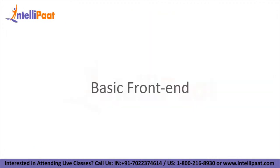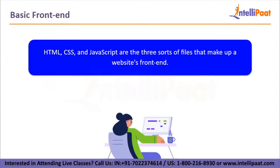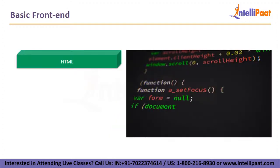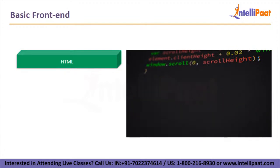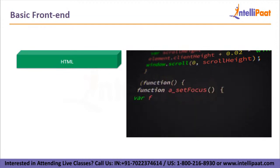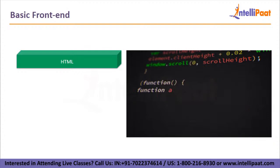Now let's understand the basic front-end. HTML, CSS, and JavaScript are the three sorts of files that make up a website's front-end, loaded in the browser on the client side. First, we have HTML — Hypertext Markup Language. All websites are built on HTML. The HTML file contains all of the page's content and employs tags to distinguish between different sorts of material, such as headline titles, paragraphs, bulleted lists, and images. HTML tags have some styles linked to them, but they are rather simple.